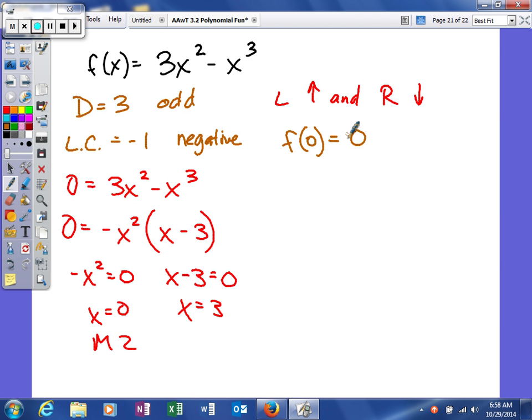And then next I can test for symmetry. There is no symmetry in this one because if you look at the polynomial, this term has a degree of two, this term has a degree of three. One's even, one's odd, so no symmetry.